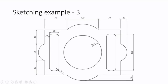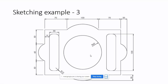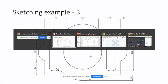So first let us try to draw this rectangle, this circle, and this circle. But actually this arc will be different - this arc is of a different type. So let us try to make the dimensions.